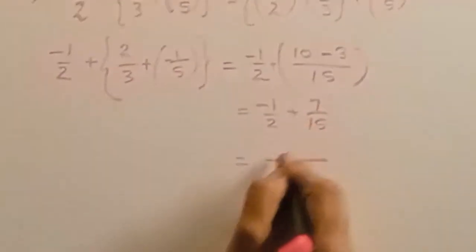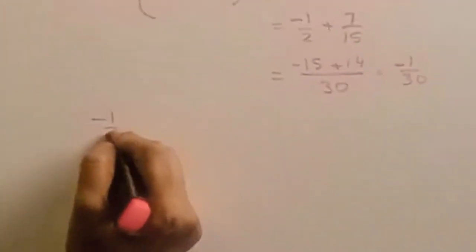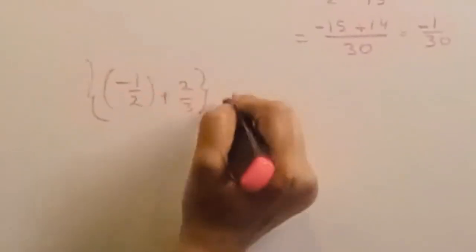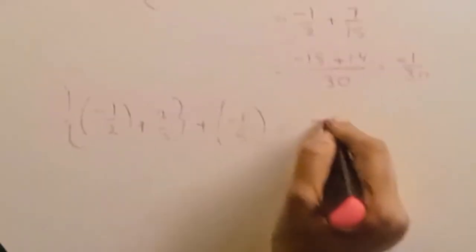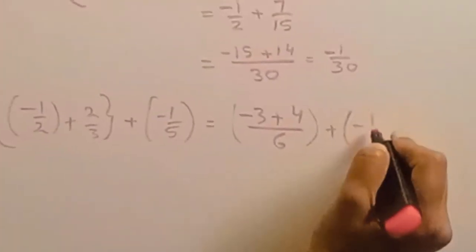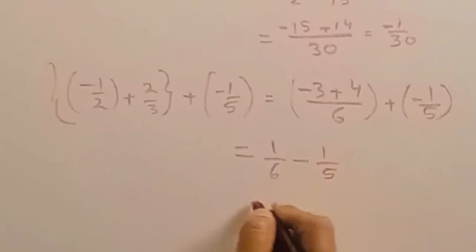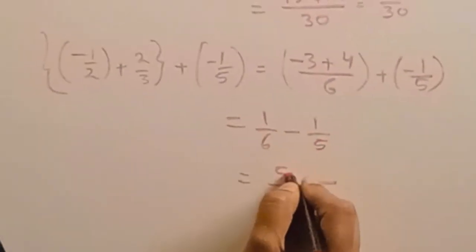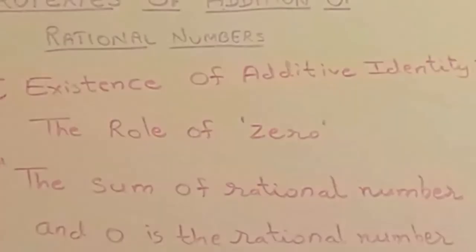15 twos are 30, 15 ones are 15, plus 14, giving minus 1 by 30. Now the right hand side: 1 by 2 plus 2 by 3, in the bracket, plus minus 1 by 5. Solve the bracket first: minus 3 plus 4 by 6 equals 1 by 6. Then 1 by 6 plus minus 1 by 5: 6 fives are 30, 5 ones are 5 minus 6 ones are 6, so minus 1 by 30. Both sides equal minus 1 by 30, confirming the associative property.